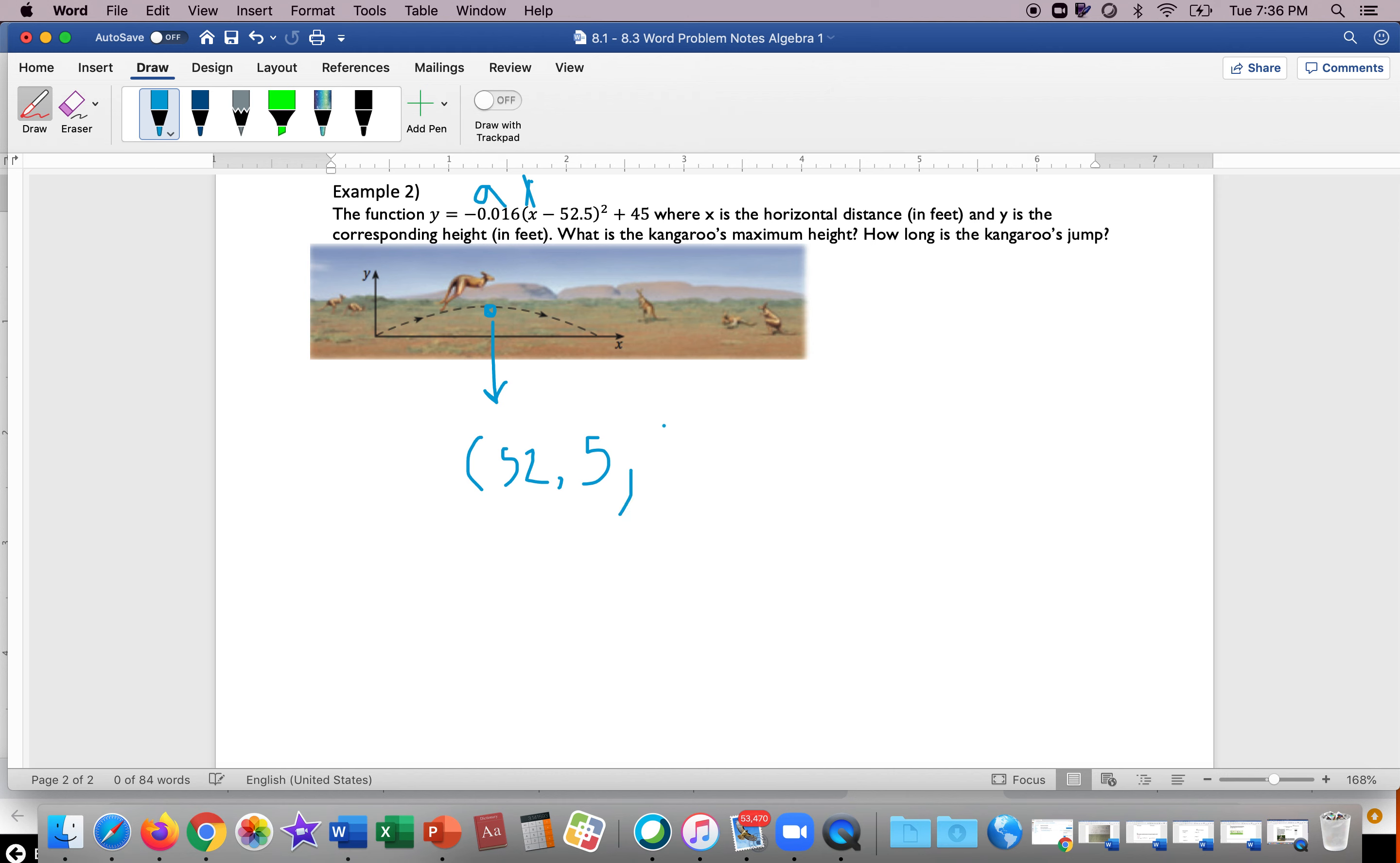And we can add units later. X represents your x-axis, right? So in this case this is our x, and up and down is the height of the kangaroo, your y. So we know that y represents the height of this kangaroo.